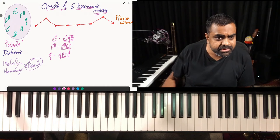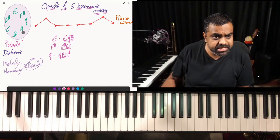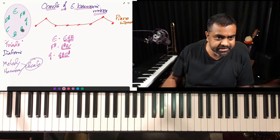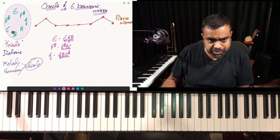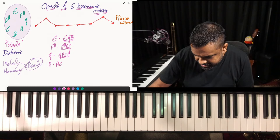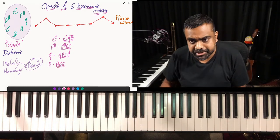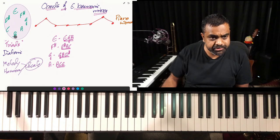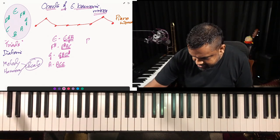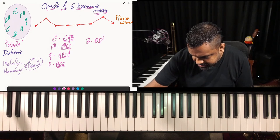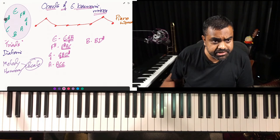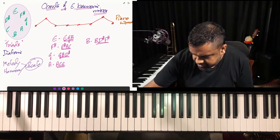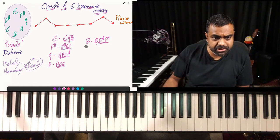Moving on, the next one is A. Moving a bit quicker now: A, skip B, C, skip D#, and get E. So A, C, E — that's your A minor chord. Then you have the B chord: B, D#, skip E, F#. So B, D#, F# — there's the B chord.